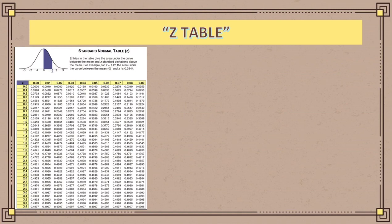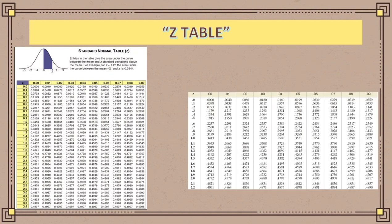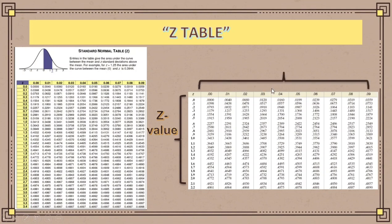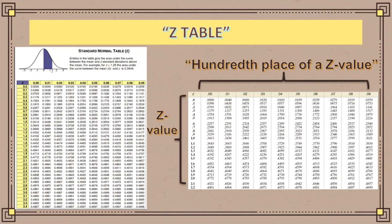Let me give you a background about the parts of a z-table. On the left side of the z-table, this part is what we call the z-values. The above part is what we call the hundredths place of a z-value. Now that you are familiar with the z-table, I will give you some examples and we will identify the area that corresponds to the z-value using the z-table.